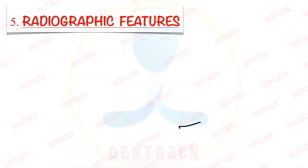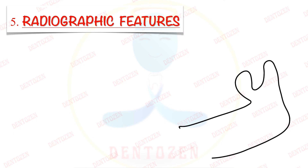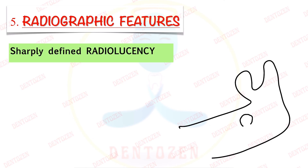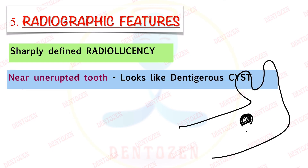When we talk about the radiographic features, it is a tumor growing inside bone, so it will appear as a sharply defined radiolucency. It is present close to an unerupted or impacted tooth, so it will again look similar to a dentigerous cyst on radiograph.